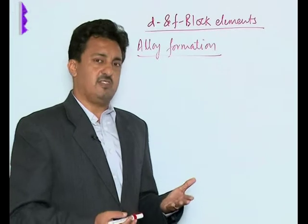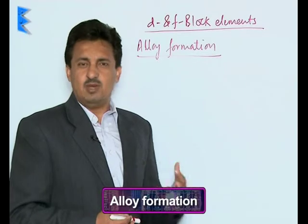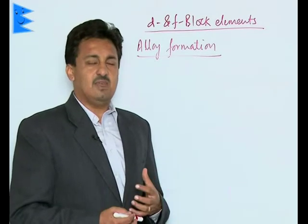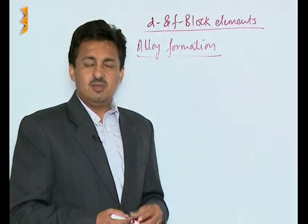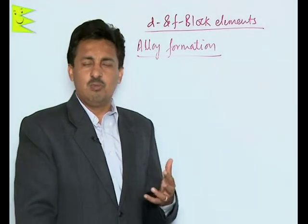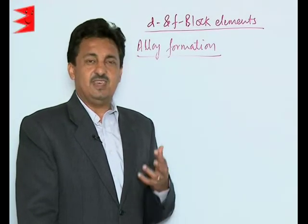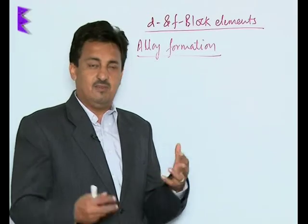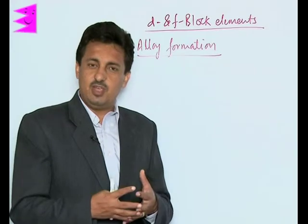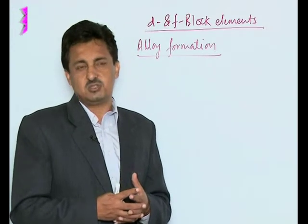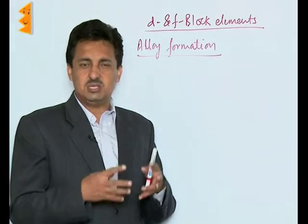The next property of transition elements is their alloy formation. They form a number of alloys and can be mixed in any ratios to form a homogeneous solid mass. The main reason they form so many alloys is that they have comparable atomic sizes, so when mixed in their molten state they easily exchange lattice positions and on solidification form the homogeneous mass. Copper and zinc mix to form brass and bronze.